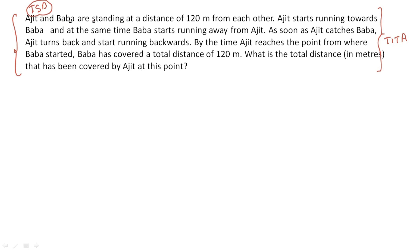Starting with the question, it says that Ajit and Baba are standing at a distance of 120 meters. Let's draw it quickly - here is Ajit and here is Baba. The distance between them is 120 meters. Ajit starts running towards Baba and at the same time Baba starts running away from Ajit, so both are running in the same direction.